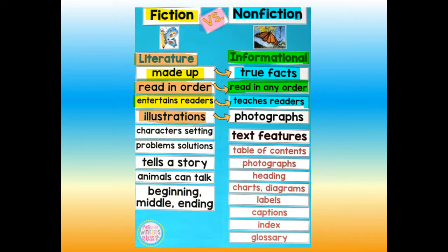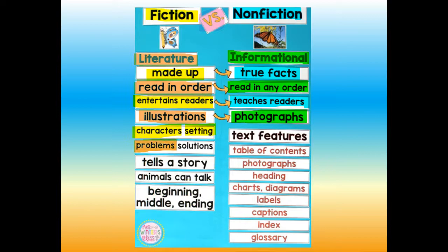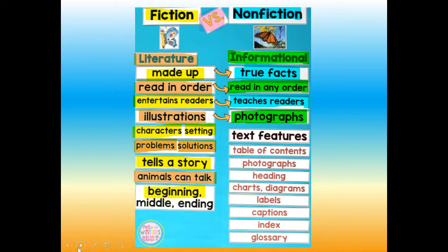Literature has illustrations, and informational text has photographs. Literature has characters, setting, problems, and solutions — it tells a story. Animals can talk in fiction. It has a beginning, a middle, and an ending.